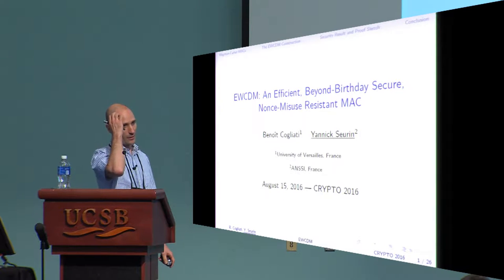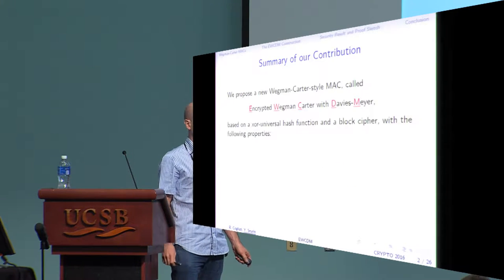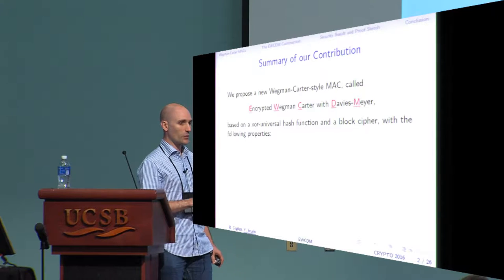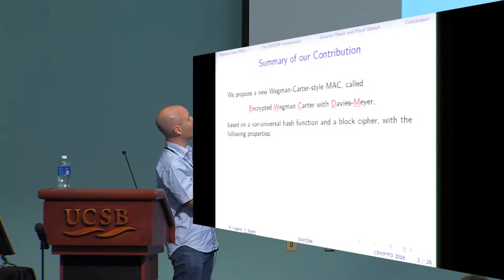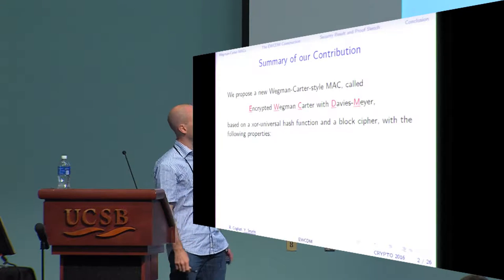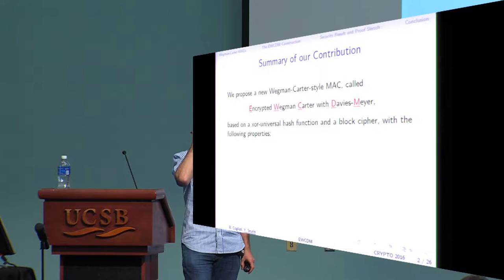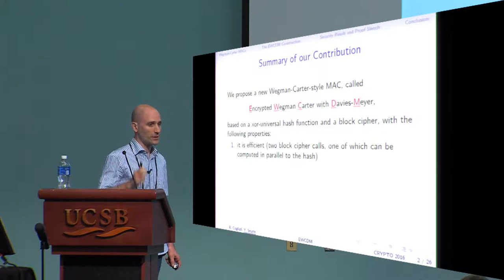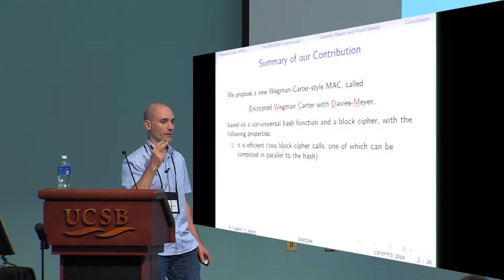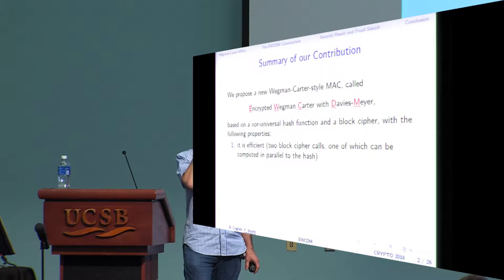This talk is about building secure MACs. We propose a new Wegmann-Carter style MAC called EWCDM — the ugly acronym stands for Encrypted Wegmann-Carter with Davis-Meyer. This new MAC is based on a XOR universal hash function and a block cipher. It is quite efficient, requiring only two block cipher calls, one of which can be computed in parallel to the hash function.